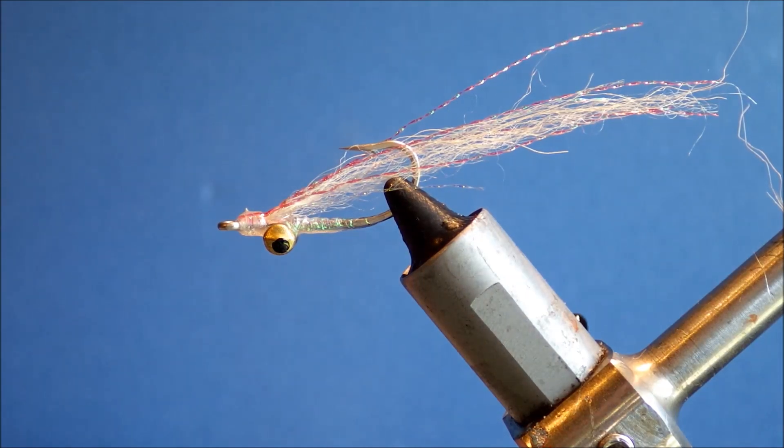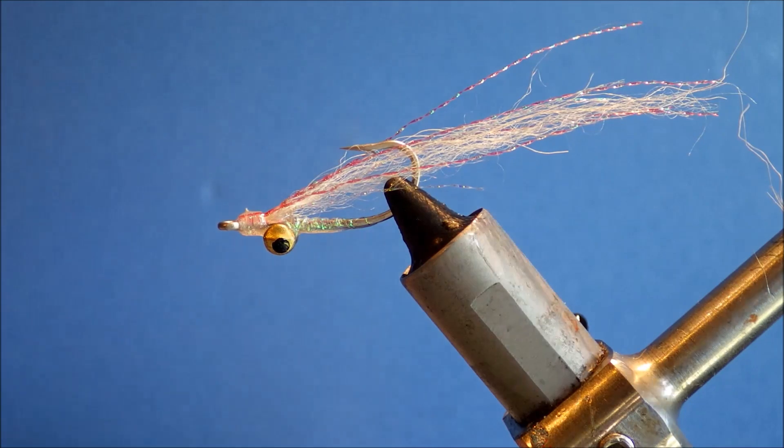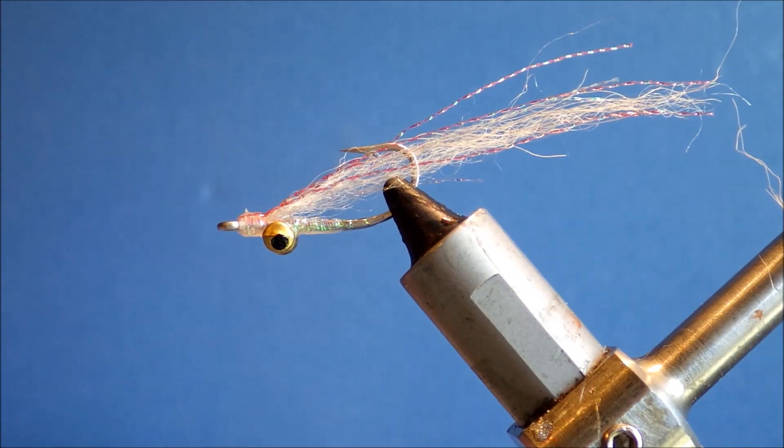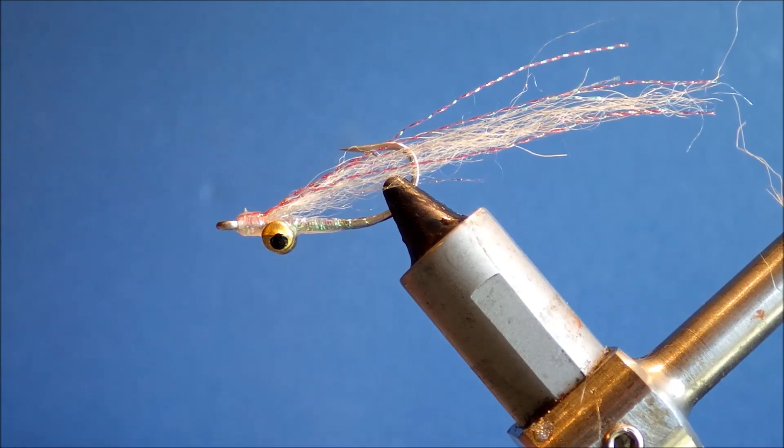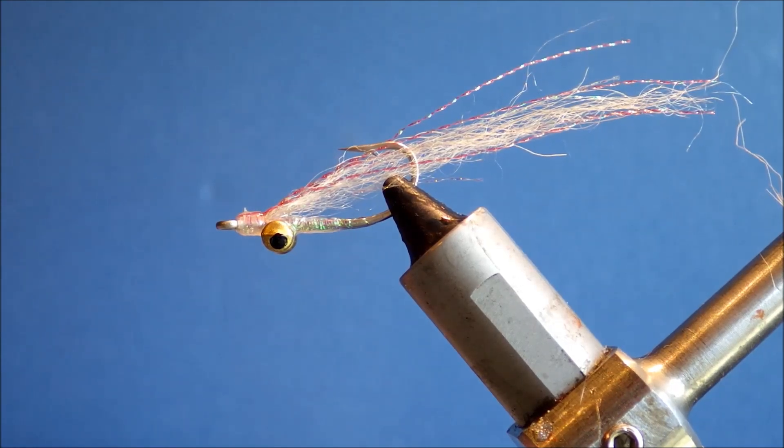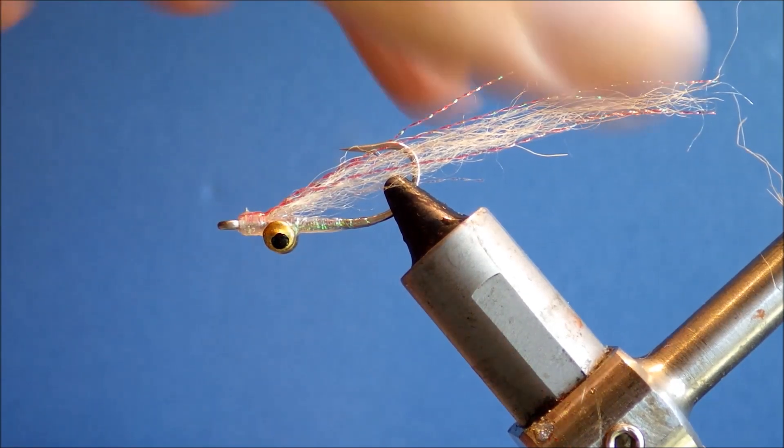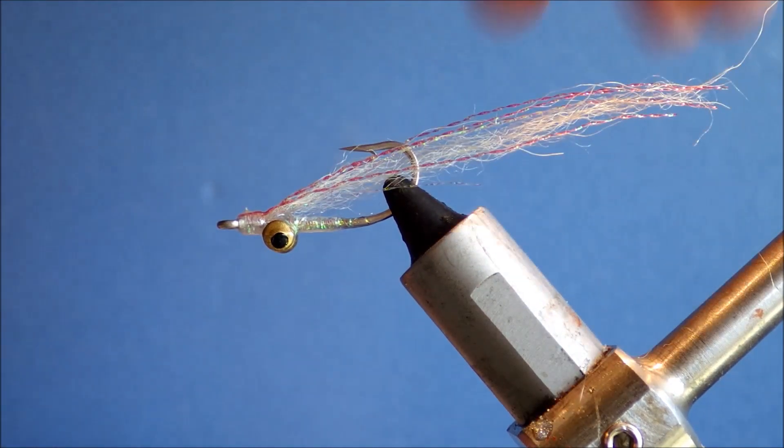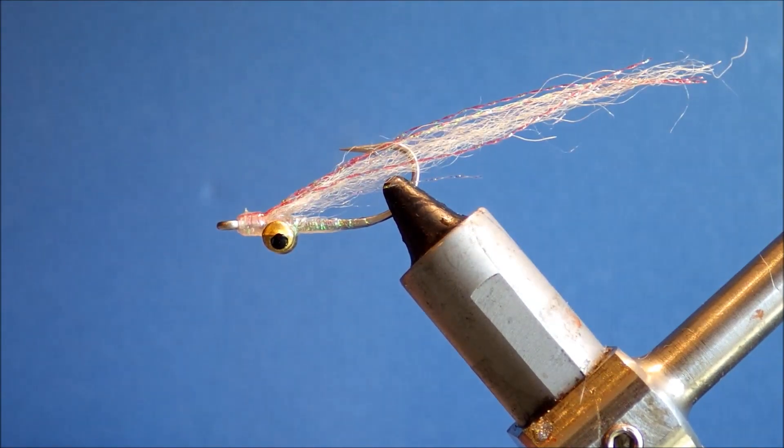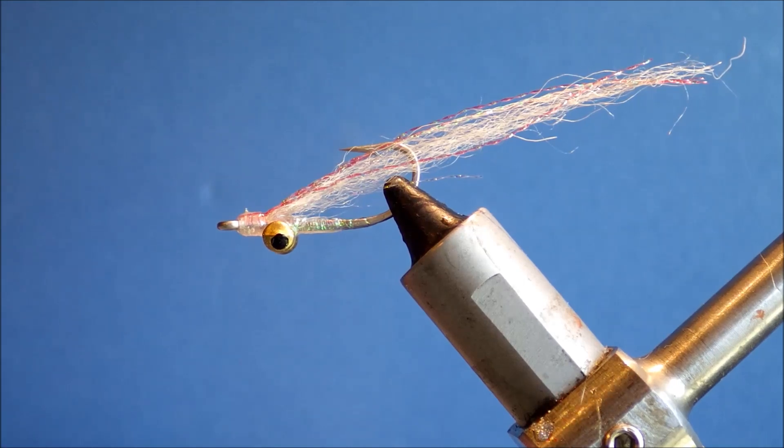There you have it. The Alphonse special. Fairly simple bonefish fly. Quite flashy but, it's very flashy but it's sparse. It's not a big bulky thing. So it's worth having something like this in your box as well. Not just big bulky winged things or attractors. Sort of flashy but still somehow subtle.